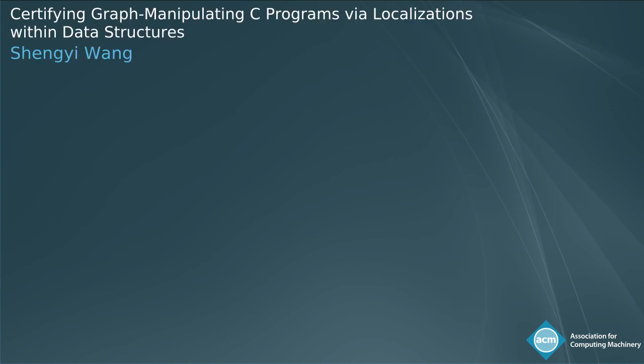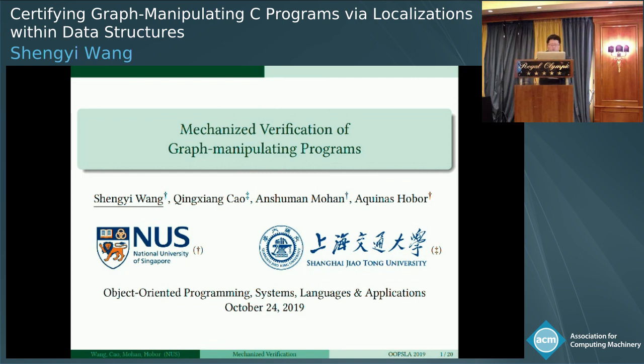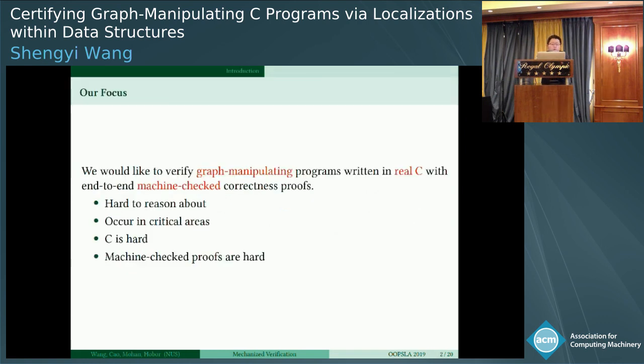Good afternoon everyone. It is an honor to introduce our work on mechanized verification of graph manipulating programs. I'm Shengyi Wang. This is a joint work with Qinxiang Cao, Shengman Moran, and Aquinas Hobor. We focus on verifying graph manipulating programs written in real C code with end-to-end machine checked correctness proofs.